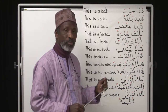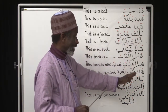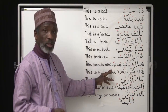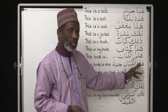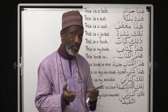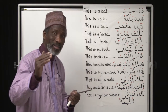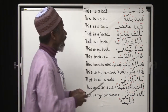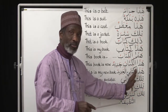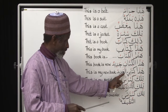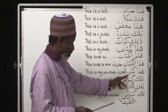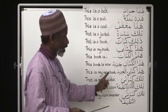Now if you remove hādhā, dhālika, or tilka, you know the structure you have already learned: 'al-kitābu jadīdun' — the book is new. We just add hādhā to get 'this book is new.' That is what I meant by holding on to the structure we built previously — your rules number one to ten are your key. 'Hādhā kitābī jadīdun' — this is my new book. If you remove hādhā, you already know how to say 'kitābī jadīdun' — my new book.